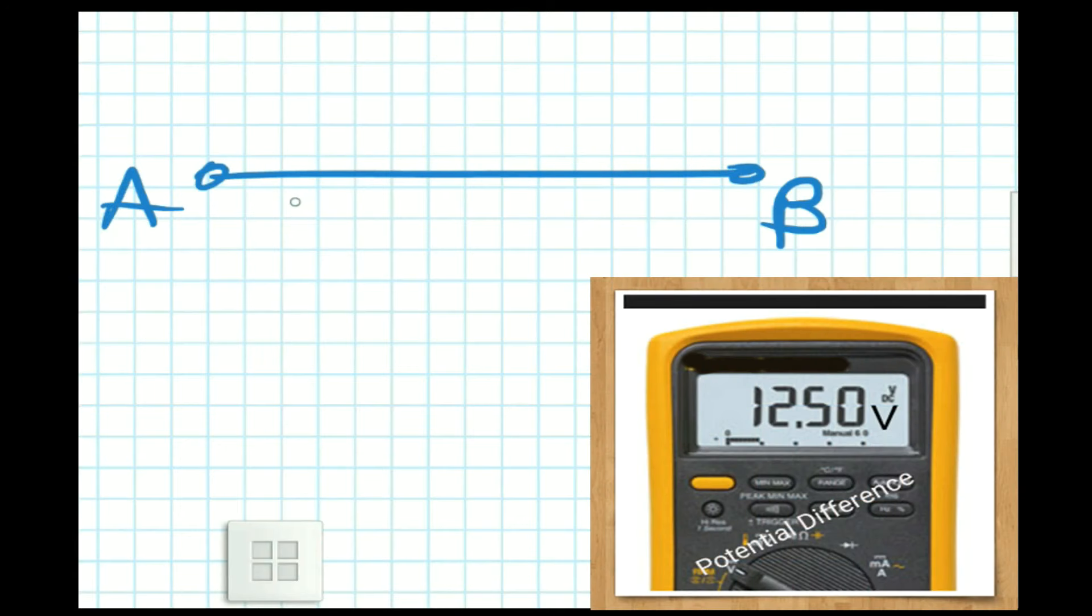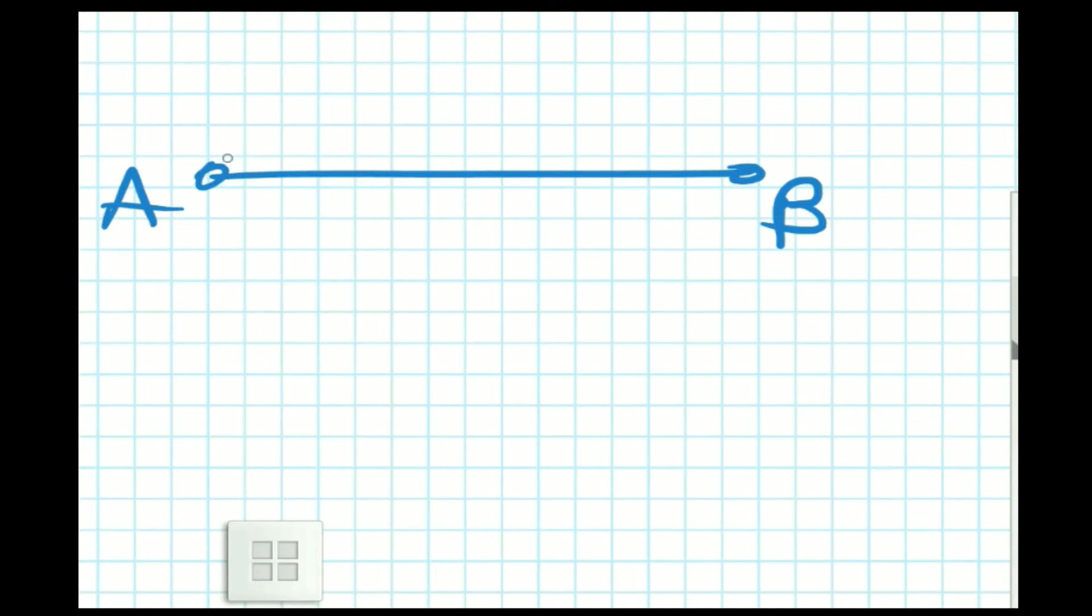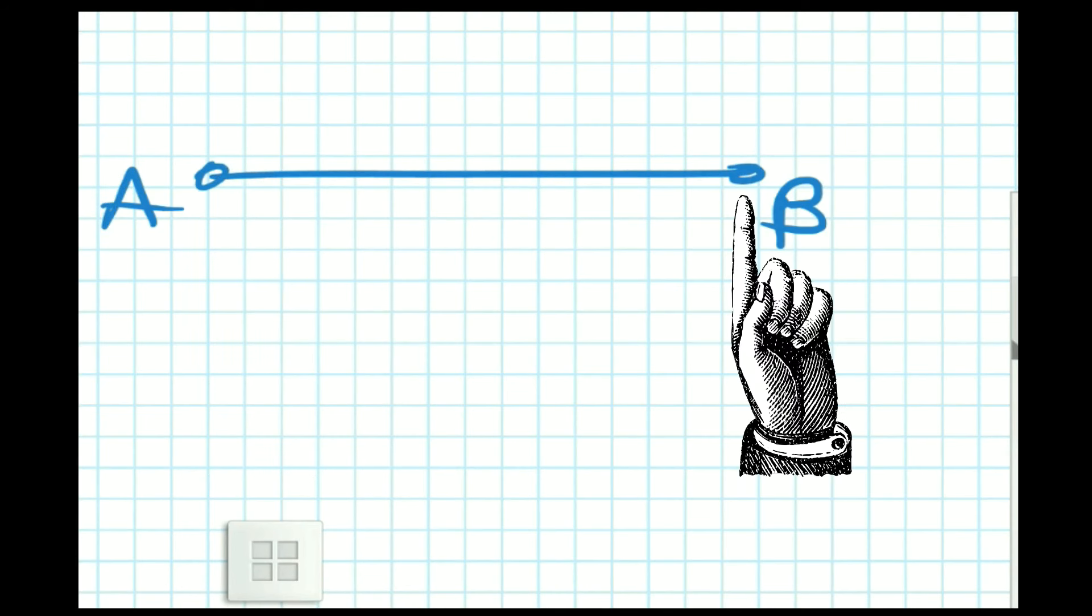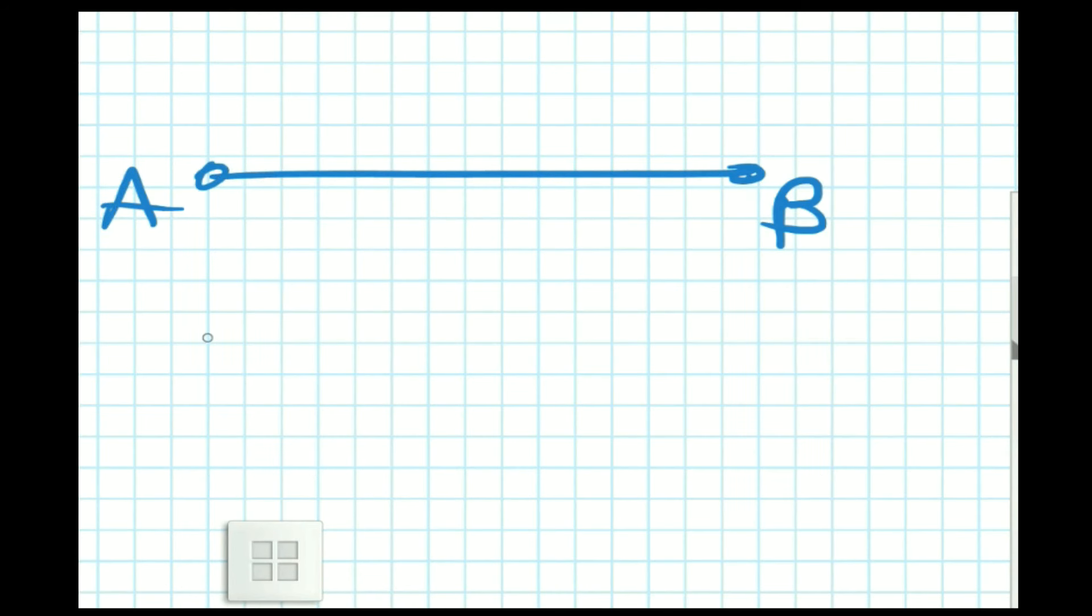Potential difference is the work done while bringing a unit positive charge from point A to point B. We can write the potential difference as VA minus VB equal to work done per unit charge.